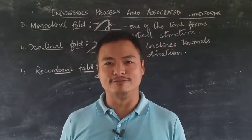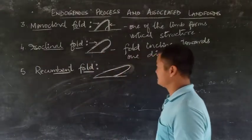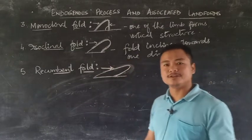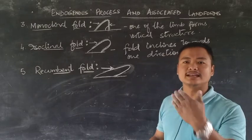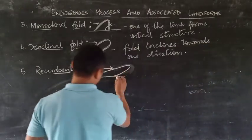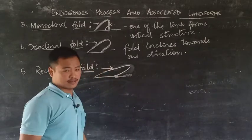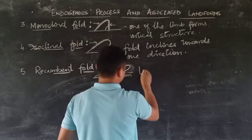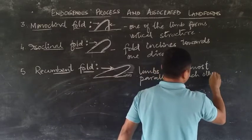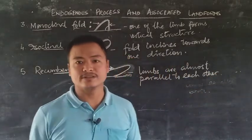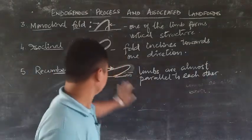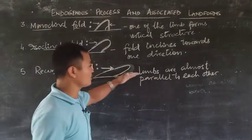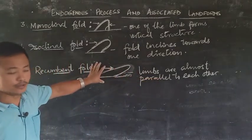The fifth type is the recumbent fold. In this fold, when further force is applied, the fold tends to incline more and remains almost parallel to the structure of the earth's crust. In this case, the two limbs of the fold appear almost parallel to each other, and this happens when further force is applied on the fold.